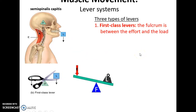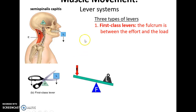There are three kinds of lever systems. First-class lever systems have the fulcrum between the effort and the load. For example, the splenius capitis muscles moving the head at the occipito-atlantal joint is an example of a first-class lever system in the body.